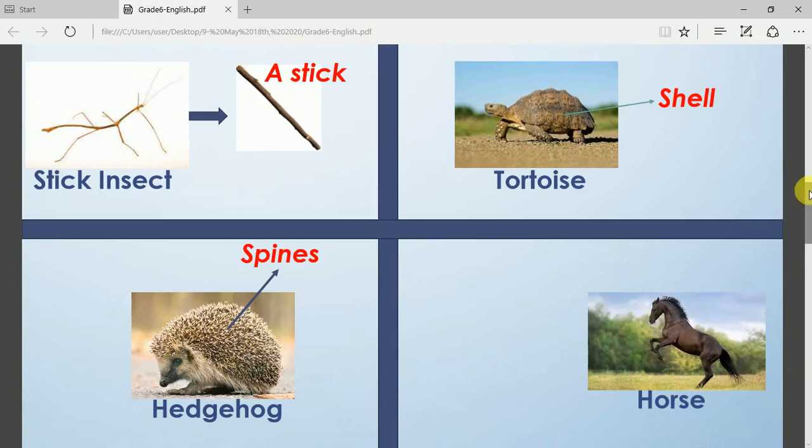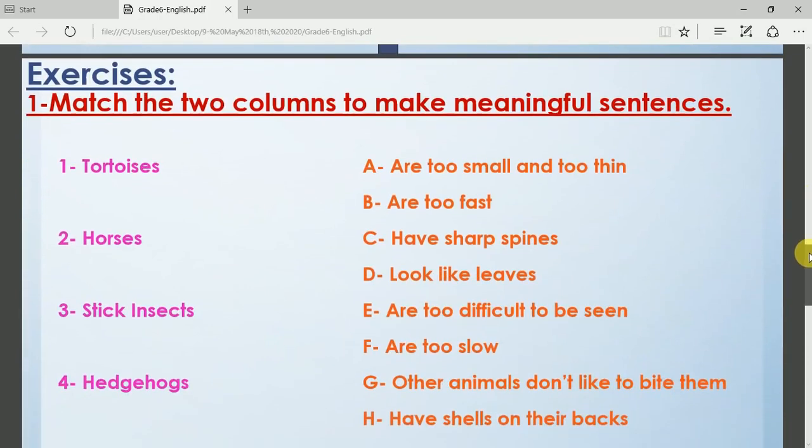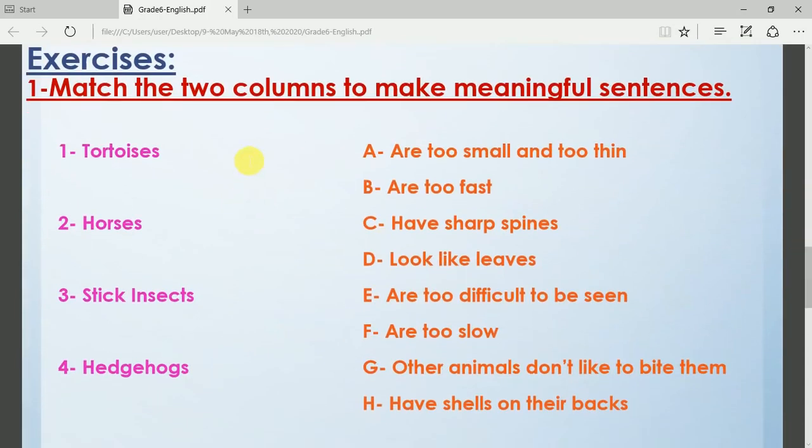Now after you have understood the keywords, it's time to do some exercises. Exercise number one: I want you to copy this exercise on your English copybook and do the exercise. Match the two columns to make meaningful sentences.